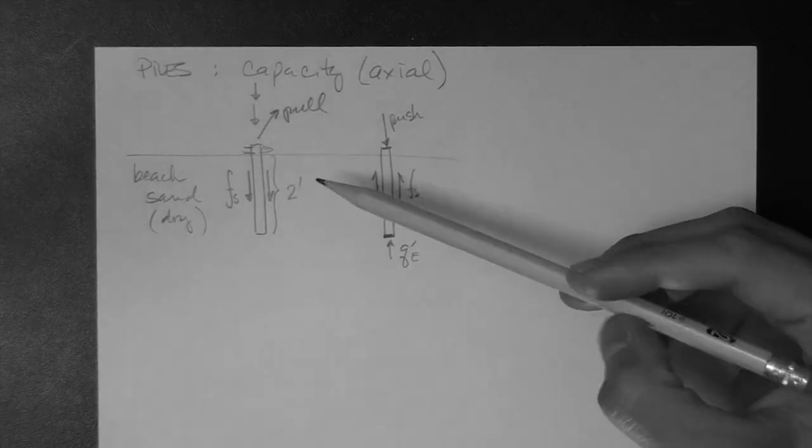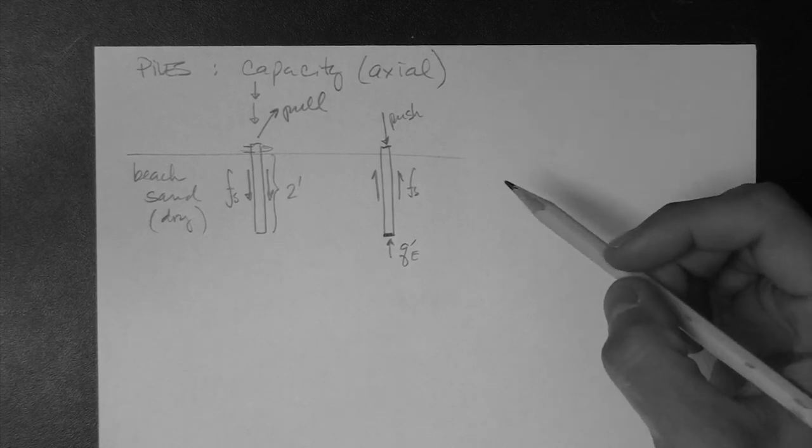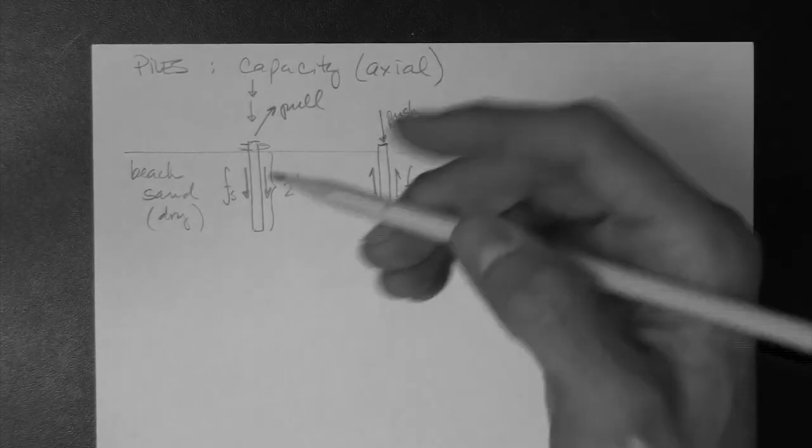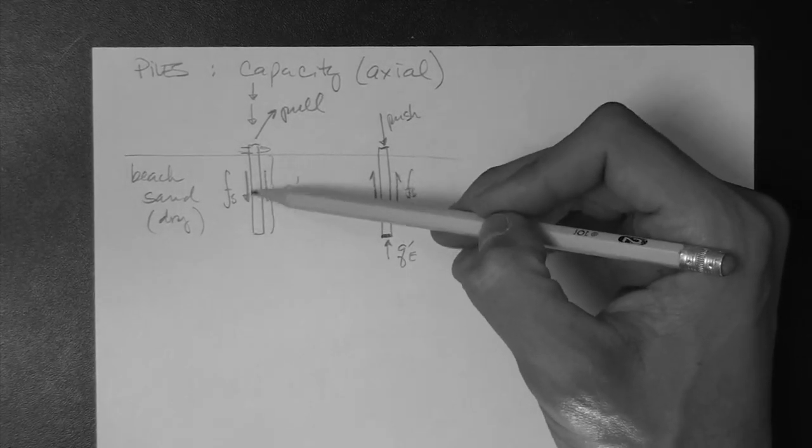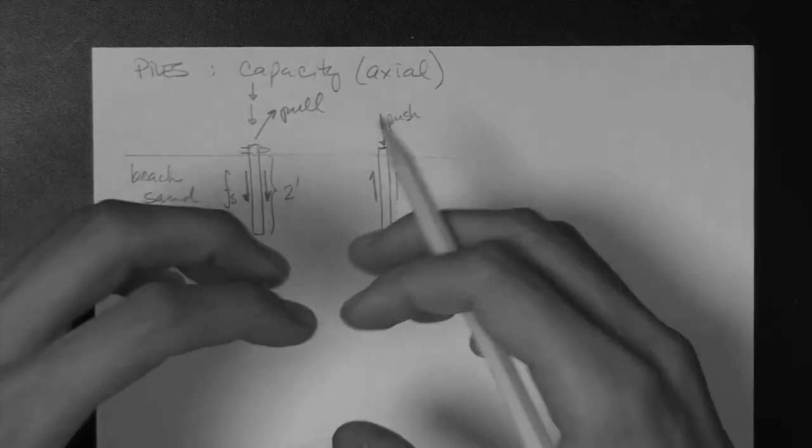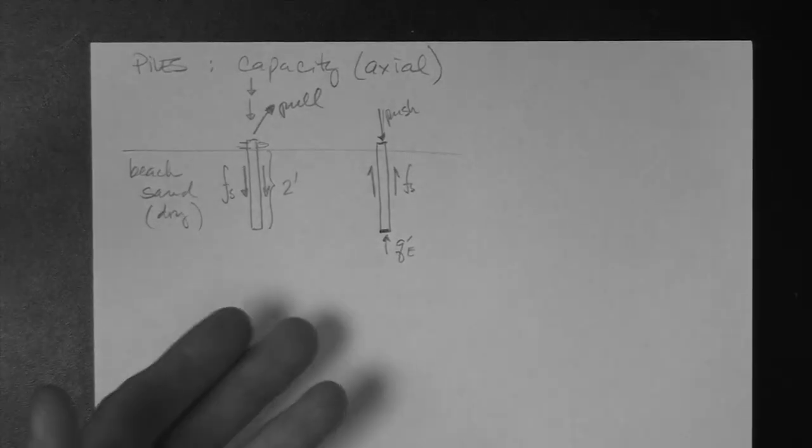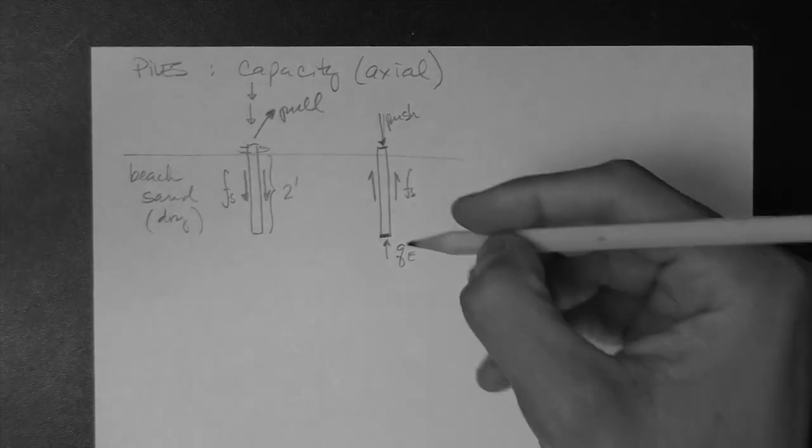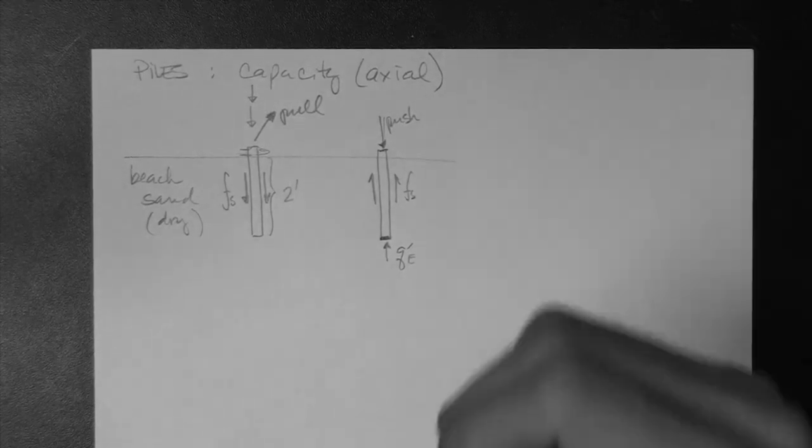So, the reason I gave you this example at the beach with the horseshoes is to give you something that you may be used to or have seen before, and to give you the notion or to teach you the notion that the side friction resistance mobilizes or is triggered or emerges when we pull or push the pile either out of the ground, or trying to get it out of the ground, or pushing it into the ground.